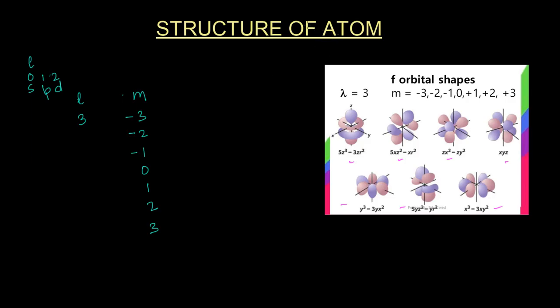We move on to the energies of the orbitals and how the electrons are distributed in these orbitals. That is called the electronic configuration. That we do next.